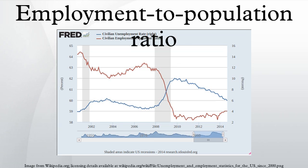Participant Rate: this represents the proportion of the population that is in the labor force. Not in the labor force: included in this group are all persons in the civilian non-institutional population who are neither employed nor unemployed. Information is collected on their desire for and availability to take a job at the time of the CPS interview, job search activity in the prior year, and reason for not looking for work in the past four-week period.